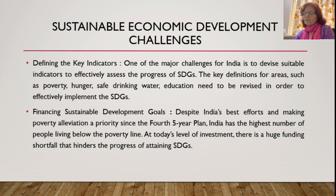The key definitions for areas such as poverty, hunger, safe drinking water, and education need to be revised in order to effectively implement the sustainable development goals. All indicators must be taken into consideration and followed in full spirit so that humanity can benefit. Financing sustainable development goals is also a challenge — despite India's best efforts since the Fifth Five Year Plan, India still has the highest number of people living below the poverty line.